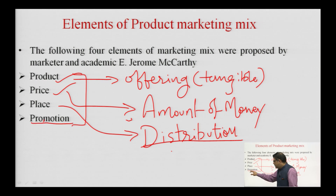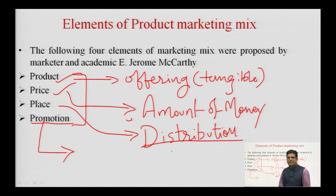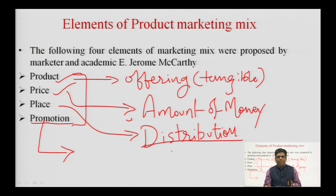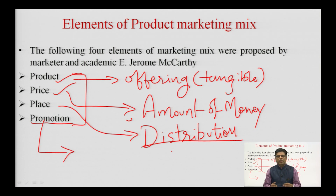Coming to promotion, this is the fourth element of marketing mix in case of a product. Promotion is actually to promote the product or to make the consumers aware about it. Any product launched into the market is not known by people, so the company has to promote it. After doing proper promotion, consumers become aware about the product and its price, then go to market and purchase it. It is important for the company to bring customers to purchase the product for the first time.